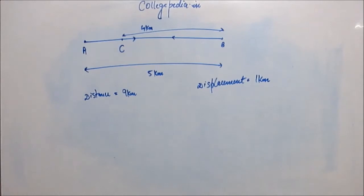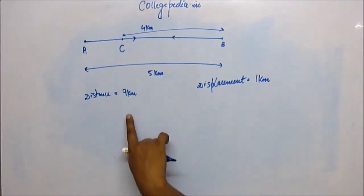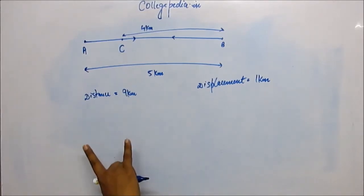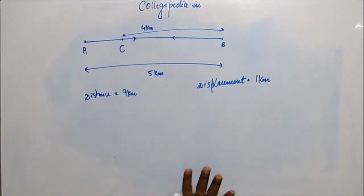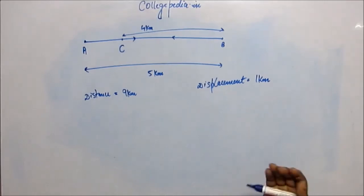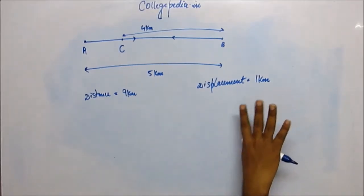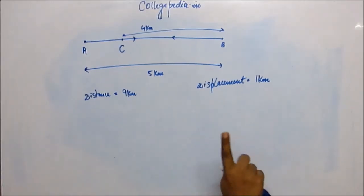But displacement is a vector quantity. If you don't know by now, you should know that vector quantity carries direction along with magnitude. Distance is a scalar quantity, so magnitude is good enough for describing distance. But displacement, being a vector quantity, should also have direction attached to the magnitude for a complete picture.